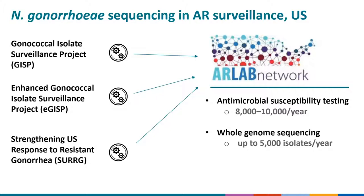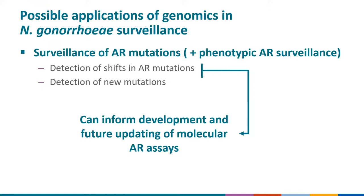One of the applications with the most tangible short-term benefits is using genomics combined with phenotypic susceptibility results to conduct surveillance of antibiotic resistance mutations. Such surveillance may detect shifts in the prevalence and distribution of resistance mutations and detect new mutations. This can inform the development of molecular resistance assays, and also — particularly because Neisseria gonorrhoeae mutates so readily — may identify when changes are needed to future assays to keep up with this rapidly evolving bug.